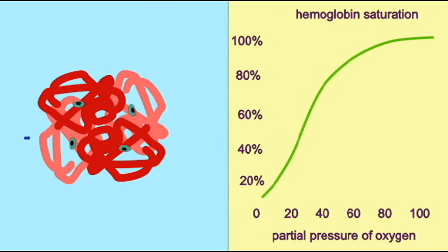This graph depicts the relationship between the partial pressure of oxygen ranging from 0 to about 100, which is the partial pressure of oxygen in the air sacs at sea level, and the saturation of hemoglobin expressed as a percent, so the percentage of the maximum amount of oxygen being transported by hemoglobin.